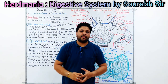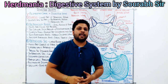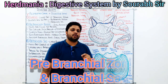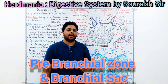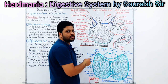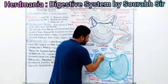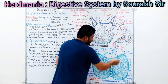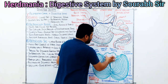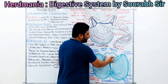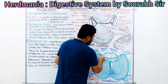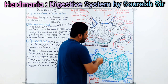The third part of the alimentary canal in Herdmania is the pharynx. The pharynx is located in the lower part of the branchial siphon. The pharynx is divided into two parts: the first is the pre-branchial zone and the second is the branchial sac. Looking at the diagram, the pre-branchial zone is the smaller part, and the larger part is the branchial sac where we can see the branchial folds. We can also see the branchial sphincter.